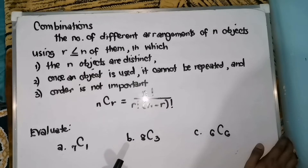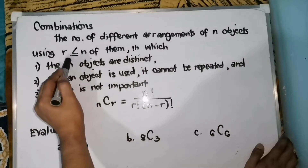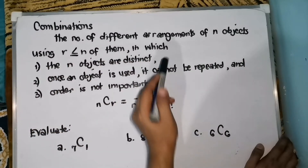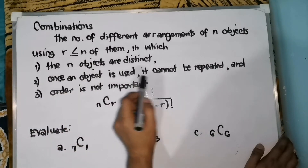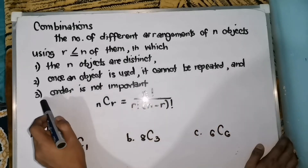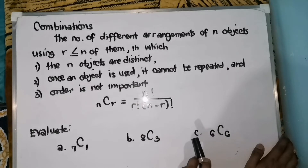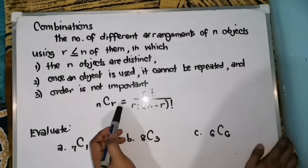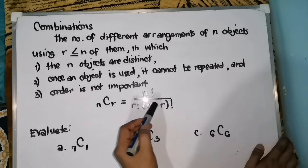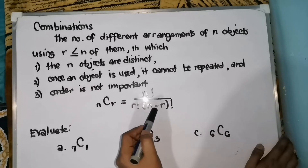Let's have the mathematical concept. Ano ba yung formula na gagamitin natin when we are talking about combinations? The number of different arrangements of n objects using r, where r is less than or equal to n: 1) the n objects are distinct, 2) once an object is used, it cannot be repeated, and 3) order is not important. The formula is: C(n, r) = n factorial over r factorial times the quantity (n minus r) factorial.